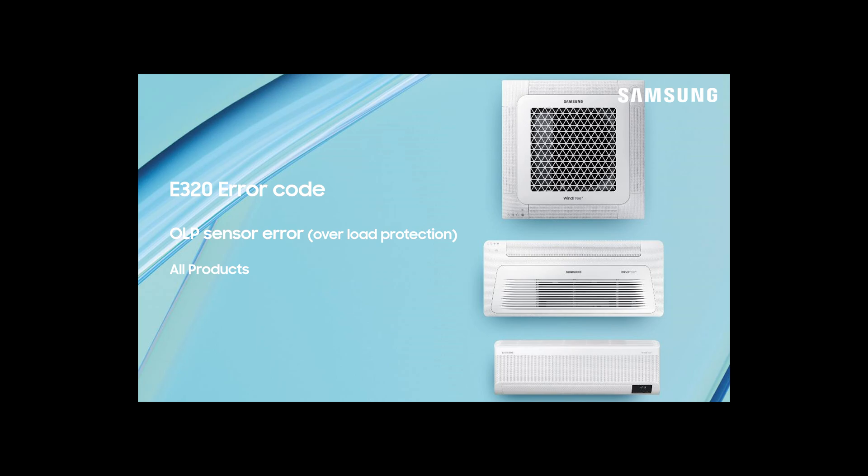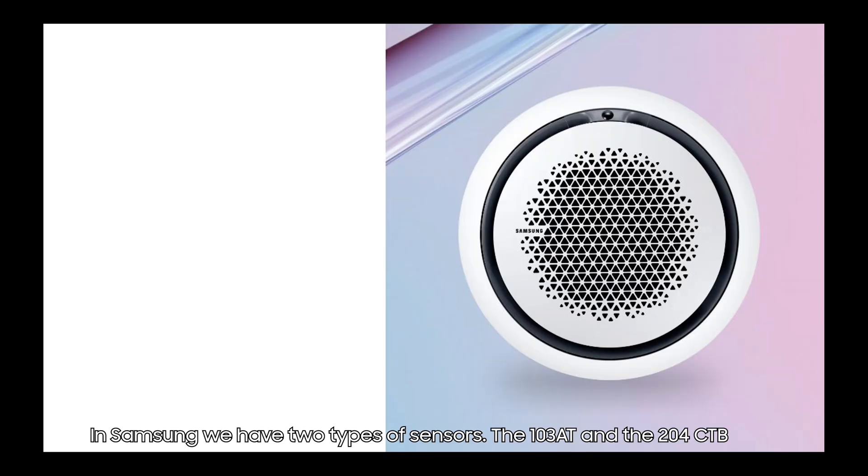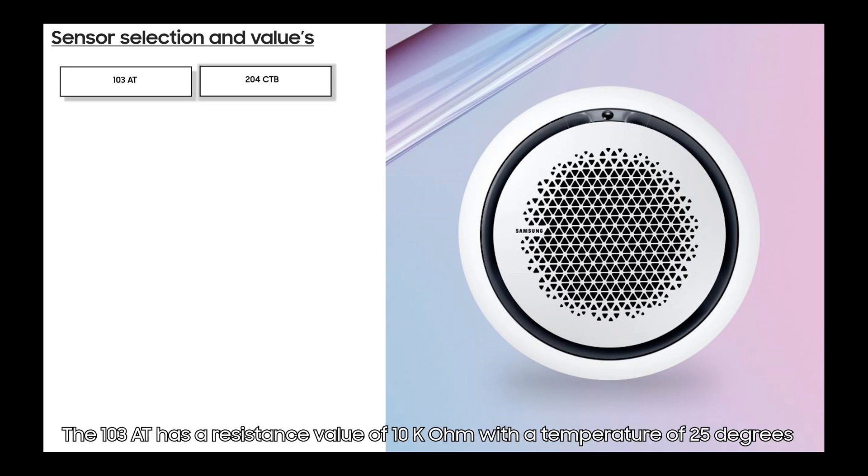First, we will start with some basic explanations about sensors. In Samsung, we have two types of sensors: the NTC 103 AT and the 204 CTP. The 103 AT has a resistance value of 10 kilo-ohms within a temperature of 25 degrees.